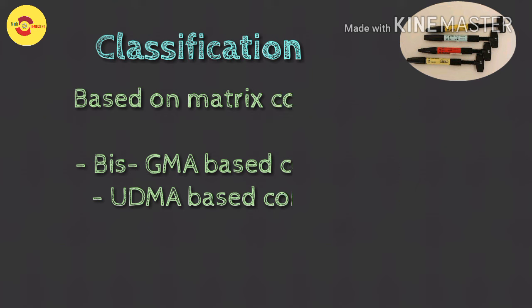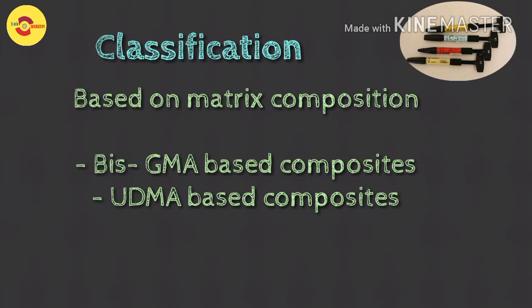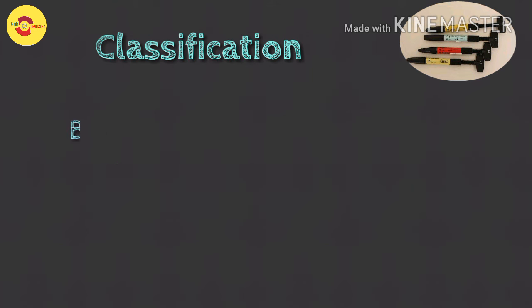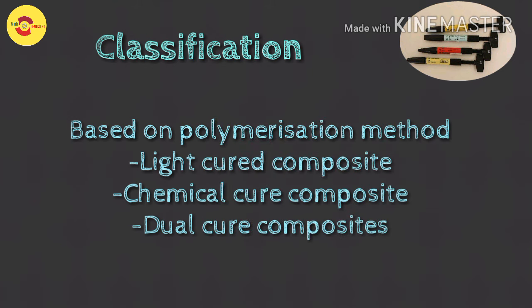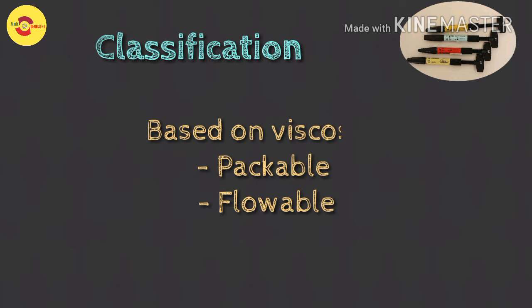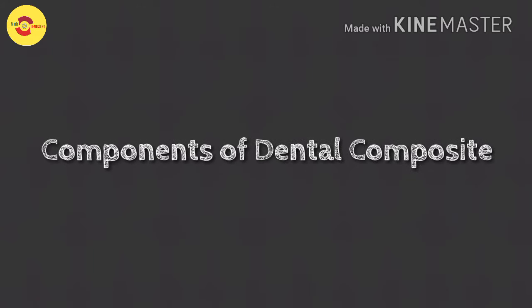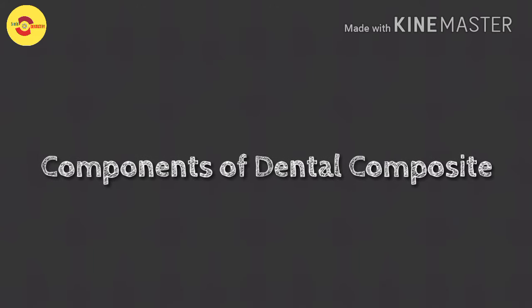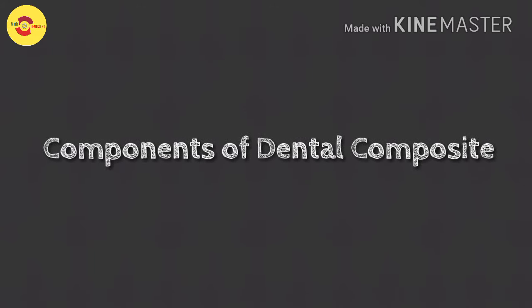Based on matrix composition, we have either bis-GMA based composites or UDMA based composites. Based on polymerization method, we have light-cure, chemical-cure, or dual-cure composites. Based on viscosity, we have packable composites or flowable composites. Now let us see in detail about the components of the composite, which will give a clearer idea regarding the classification.